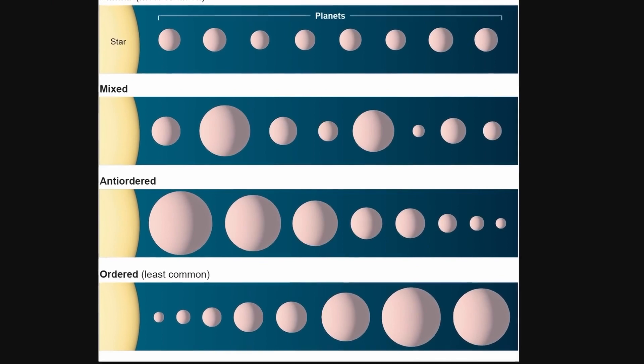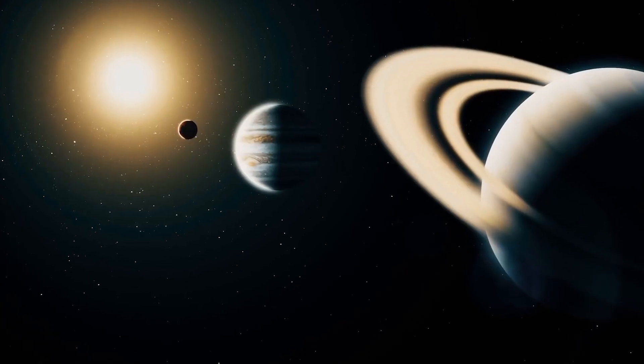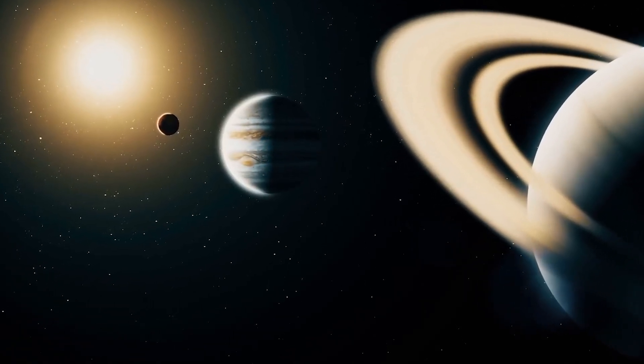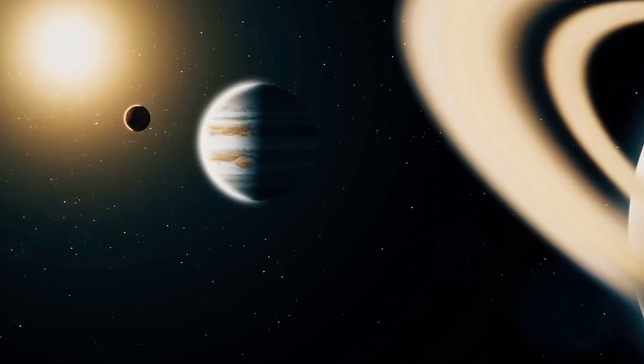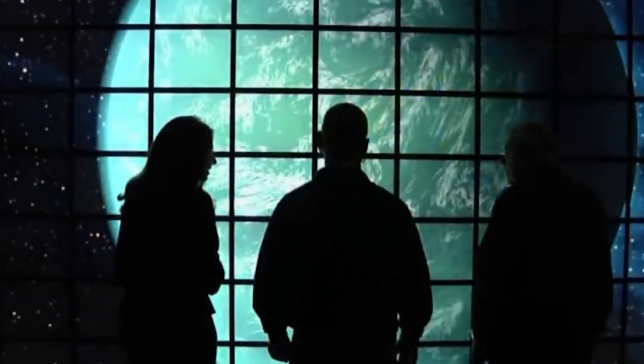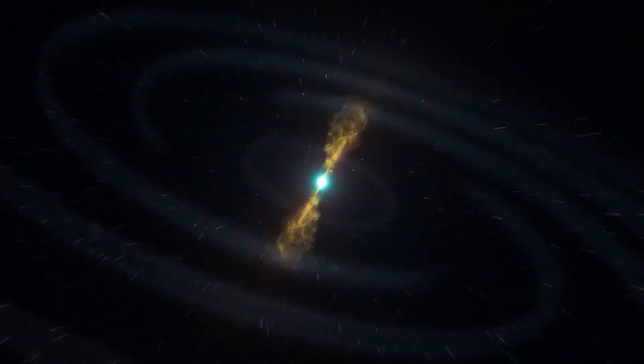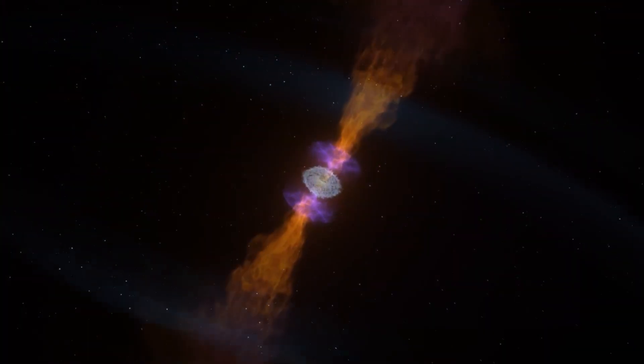Picture our very own solar system for a moment. Jupiter, with its location and massive presence, plays a vital role in shaping everything else in our neighborhood. It could even be responsible for the number of collisions that happen throughout our solar system.